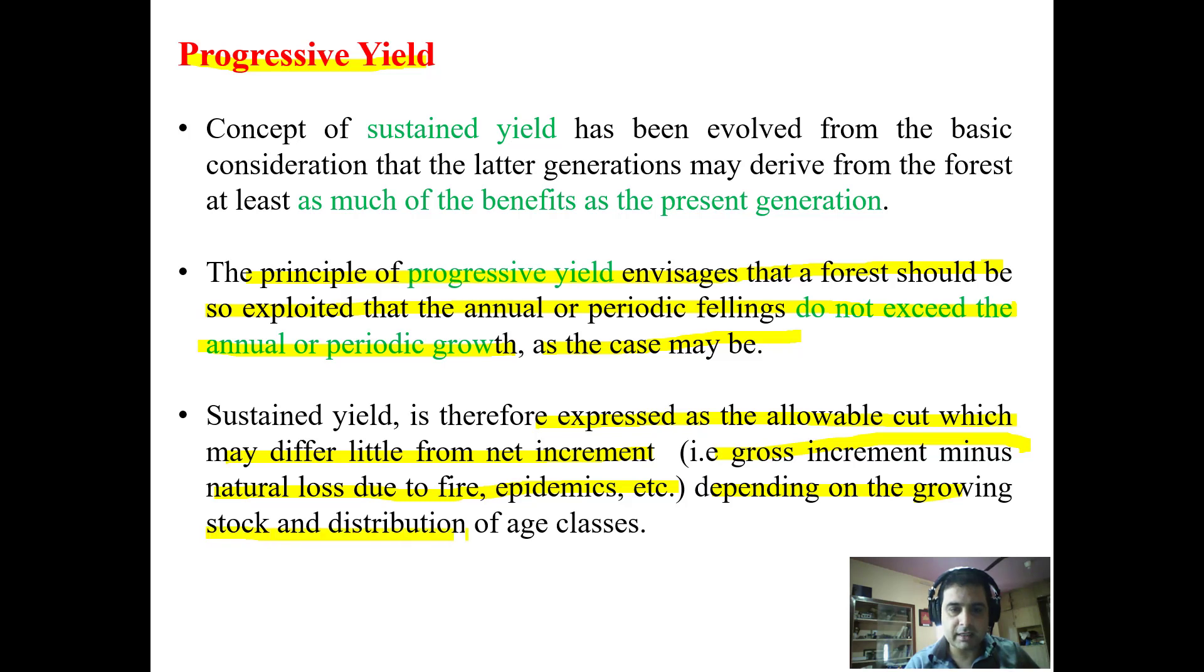Now we have to understand the difference between the two. The progressive yield has to increase every year. If in the first year we got a yield of 10i, as in the previous diagram, we have to take care that this yield is increasing. So we try to get 11i in the next year and 12i in the third year. It has to go on increasing to serve the purpose.